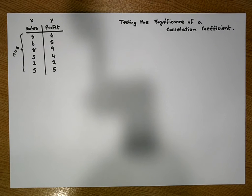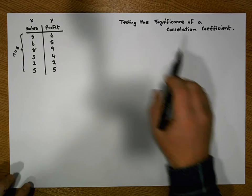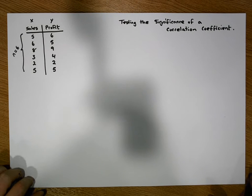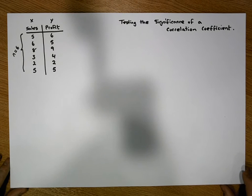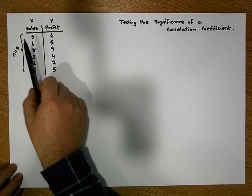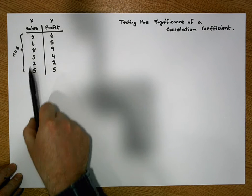Hi guys, this is Jonathan Lambert with the Mathematics Development and Support Service at the National College of Ireland. This short video is going to detail how to test the significance of a correlation coefficient. For this particular video we're going to use a fictitious data set, which we have defined over here.